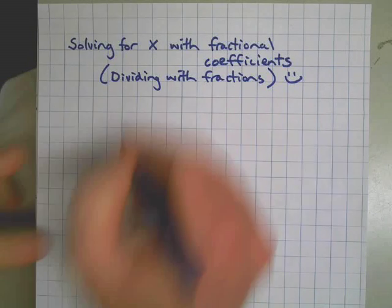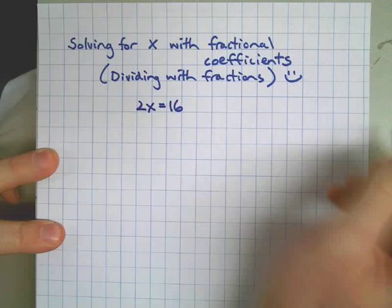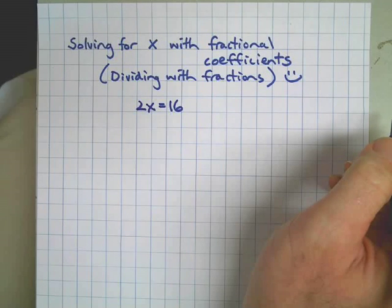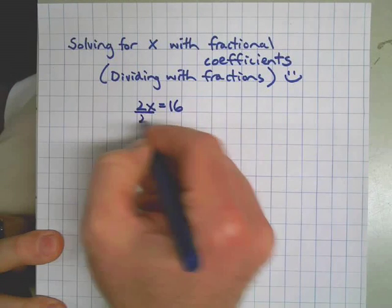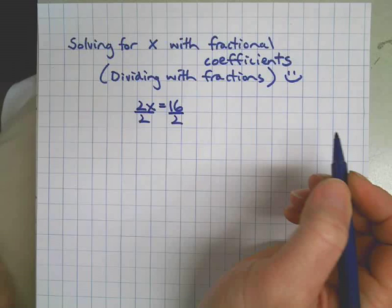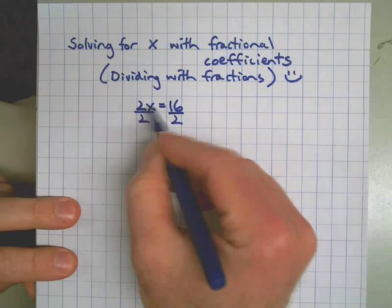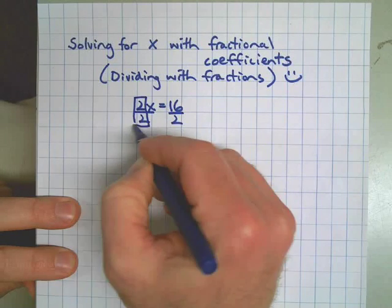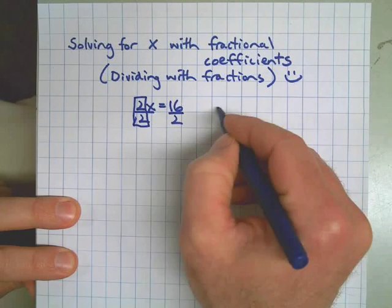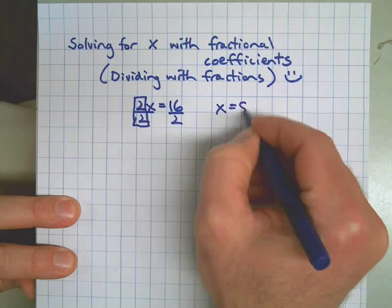Back in the olden days we learned how to do problems like this by isolating the variable, or getting x on one side. We did that by dividing by the coefficient — we didn't know the word coefficient at the time, but that's what we were doing. Dividing both sides by the number next to x, which makes a 1 over there, leaving me with 1x. Then how many twos fit into 16? The answer was 8.